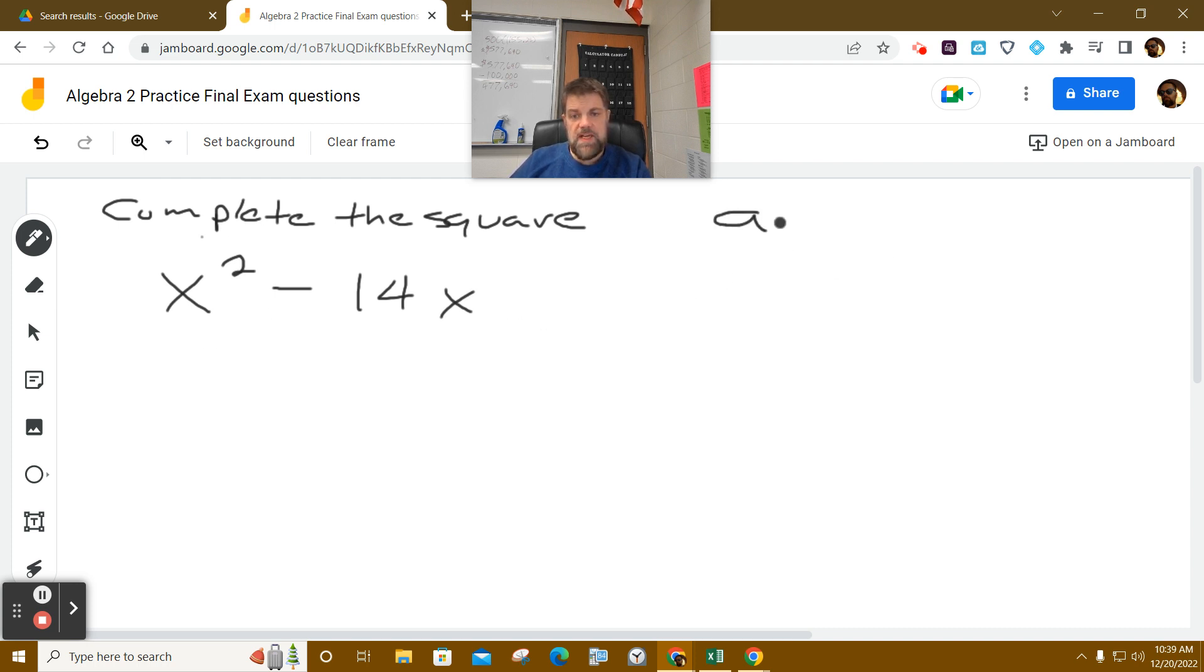Remember that we're considering expressions that look like this: ax squared plus bx plus c. And so completing the square, we need to make sure that a equals 1. In this particular case, a does equal 1, and b equals negative 14.